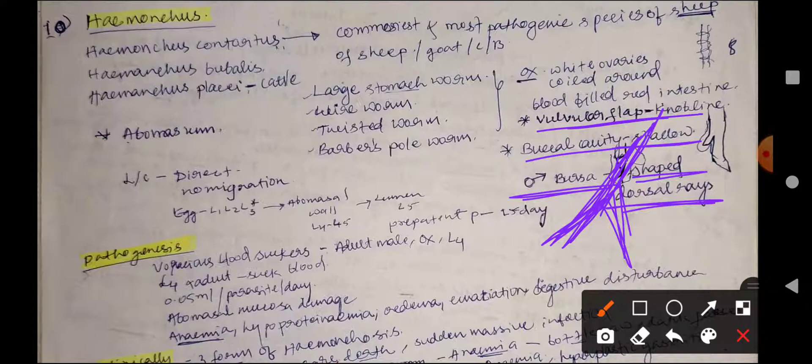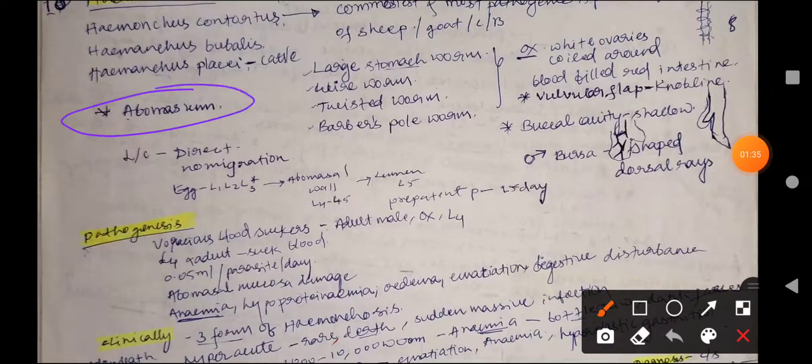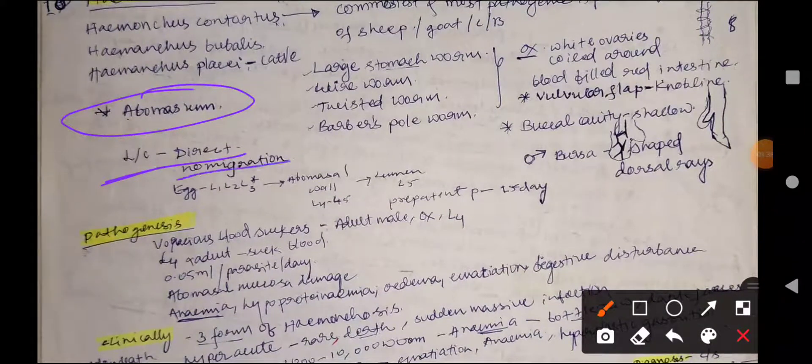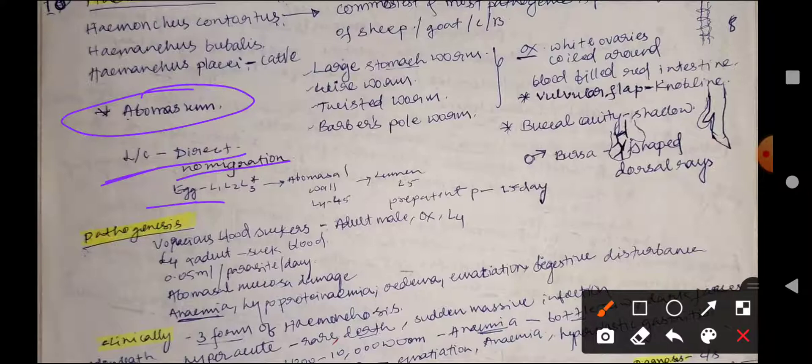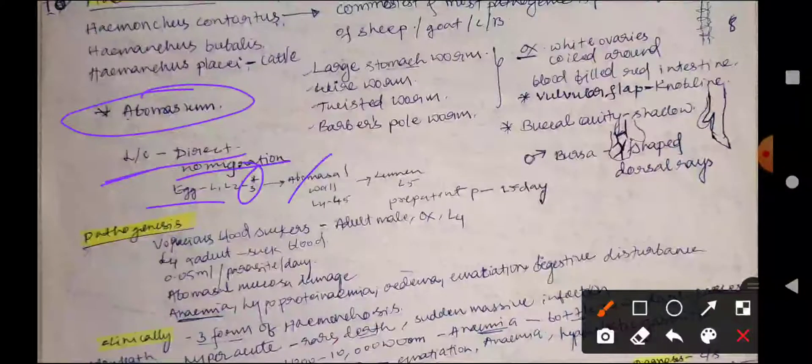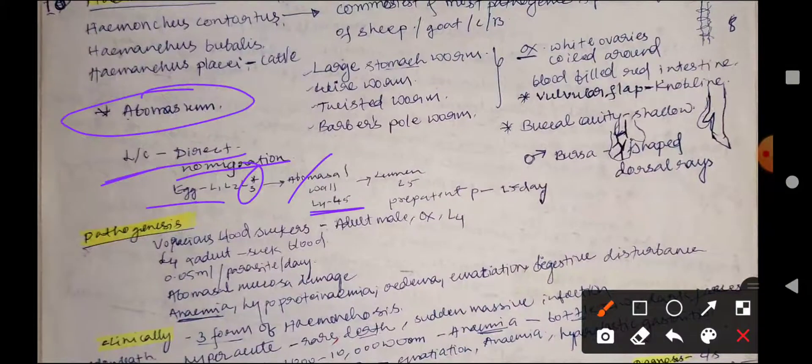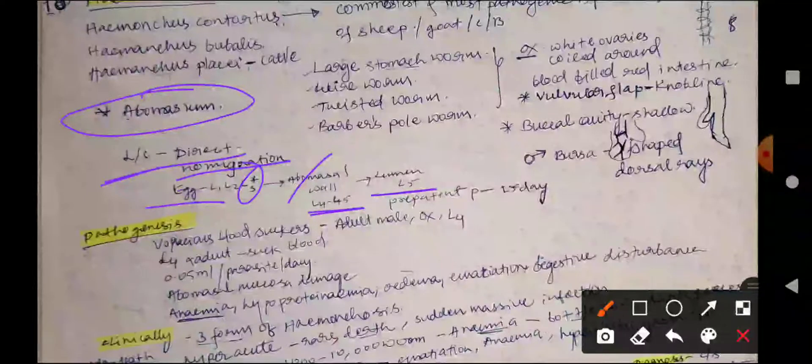Their predilection site is the abomasum. The life cycle is direct with no involvement of migration. Eggs are voided in the feces and hatch to liberate L1, L2, and L3 larvae. L3 larvae is the infective stage. It will penetrate the abomasum layer, and during penetration L4 will molt to produce L5. Inside the lumen, L5 will mature to adult worms.